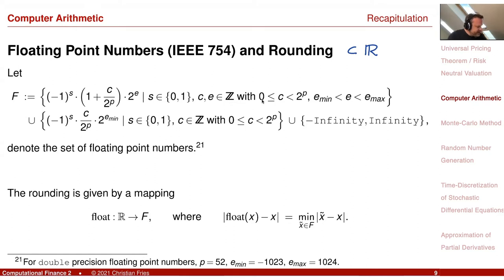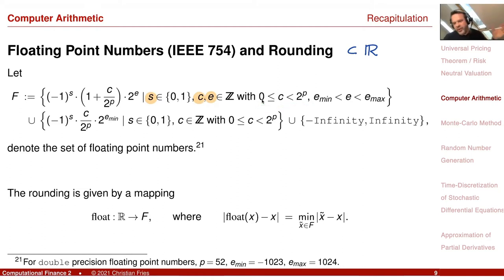The set F of floating point numbers is constructed from a set of integers. There is S, which is 0 or 1, deciding the sign. Then there is an integer E in a certain range, and another integer C in the range from 0 to 2^P. For double precision floating point numbers, you have specific values for these parameters.